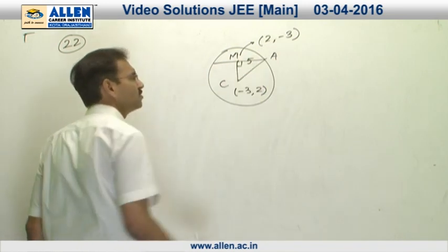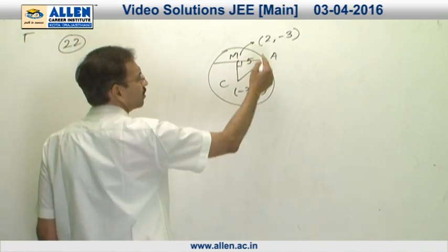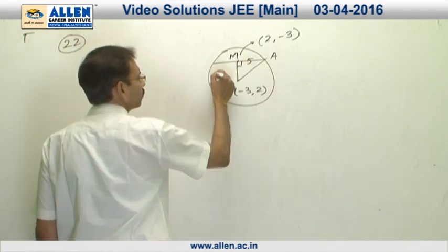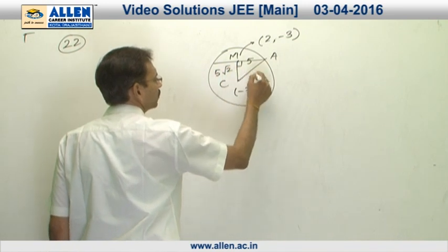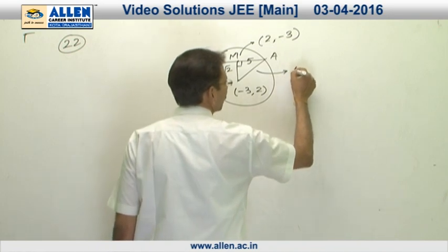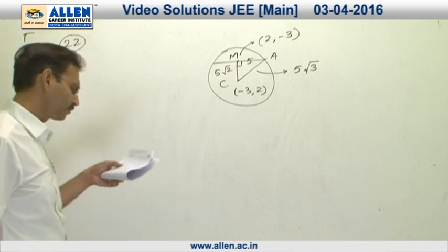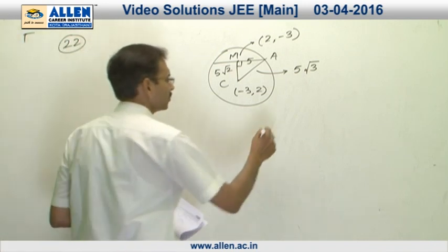Now, we have the length C m. C m length will be 5 square plus 5 square, so 5 root 2. So, by Pythagoras, this length will become 50 plus 25 is 75. Square root of 75 is 5 root 3. So, the correct answer is 3.